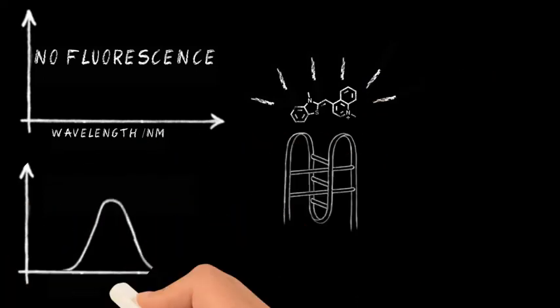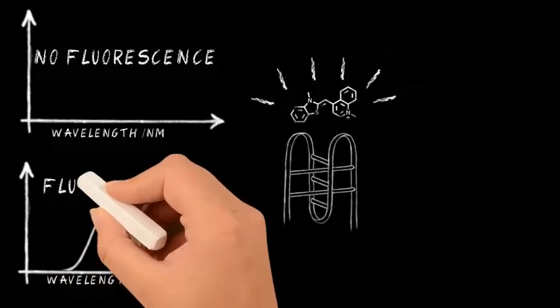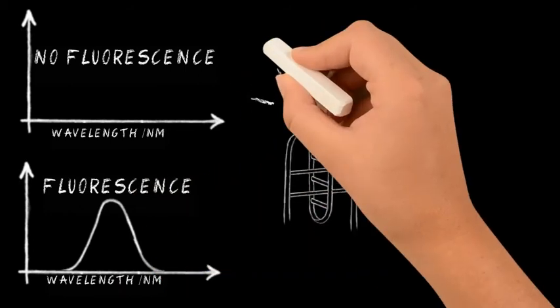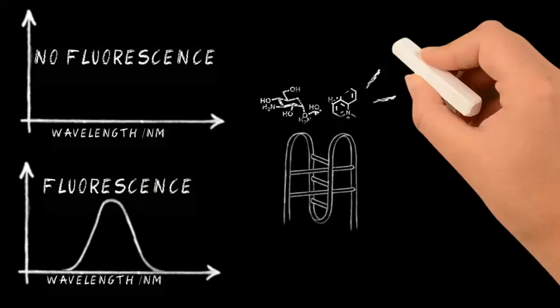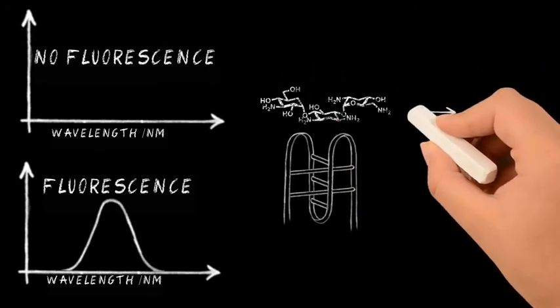But if we were to add another compound which we want to test to see if it binds iMotif DNA, it can then displace the thiazol orange probe. So here we have tobramycin displacing the thiazol orange probe, i.e. this means it kicks it off.